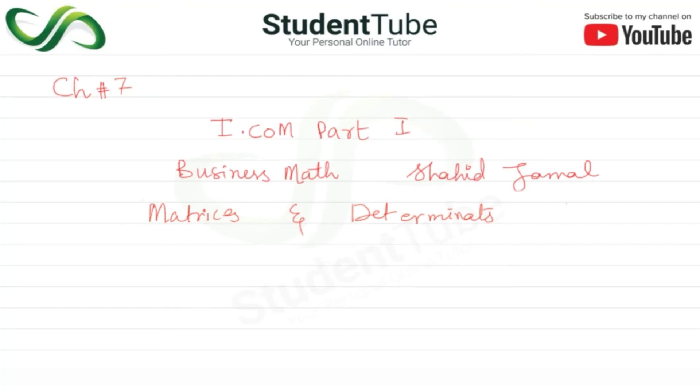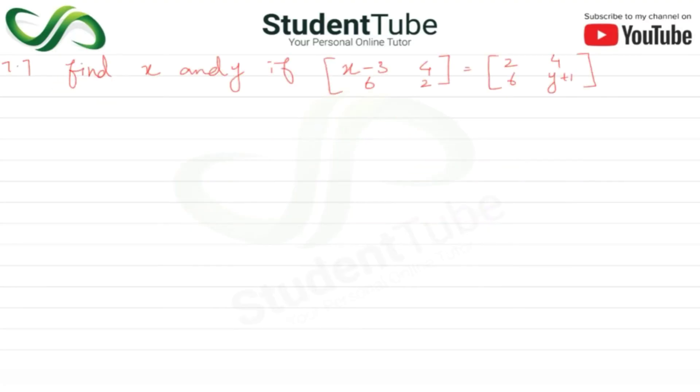Assalamu alaikum, welcome to StudentTube. In this lecture, Chapter 7, T.com Part 1, Business Math book by Shahid Jamal, the chapter is Matrices and Determinants. Exercise 7.7: find x and y value. So here we will write the matrices. Here, x minus 3, 6, 4, and 2.